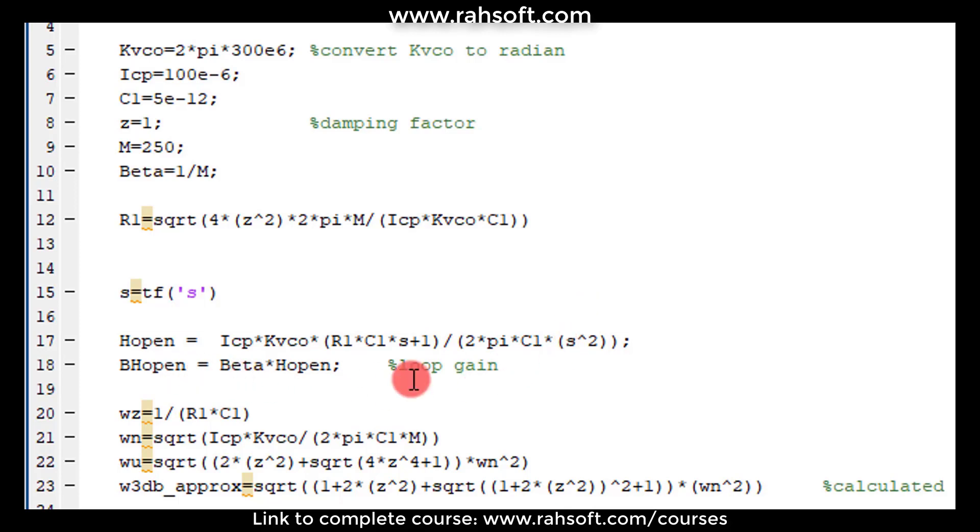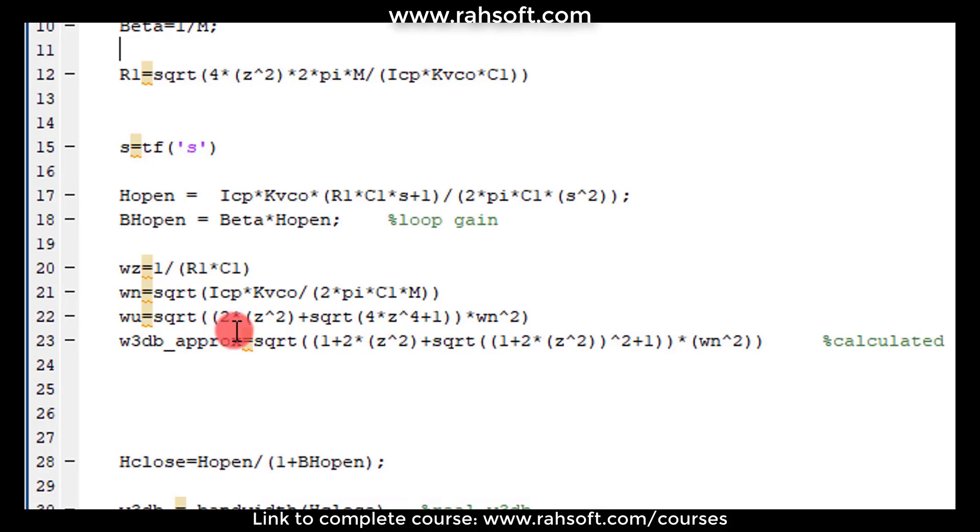And then the loop gain here is beta times H open which I just multiply beta and beta is defined as 1 over M. And these are the formula basically we came up with.